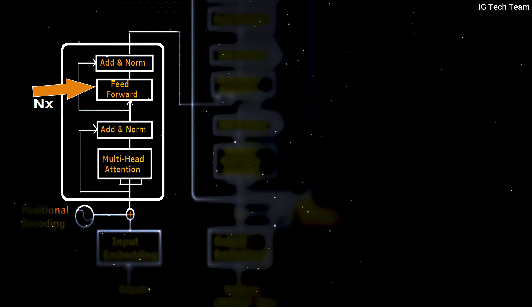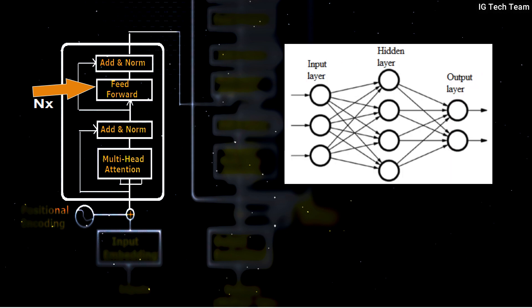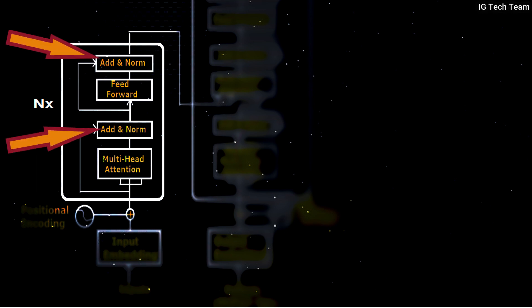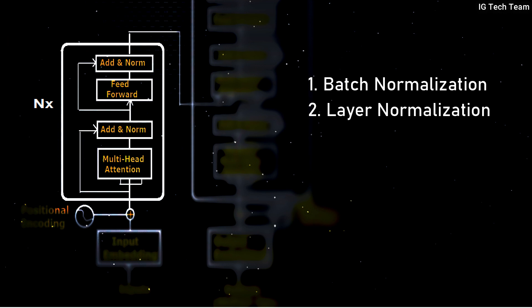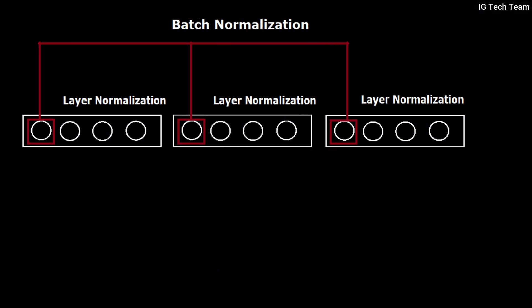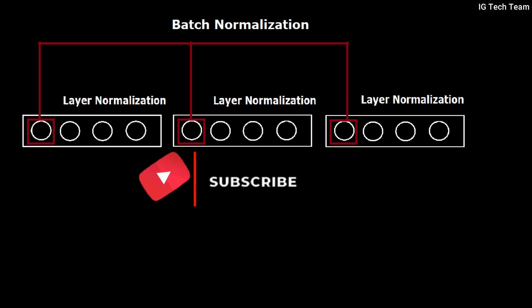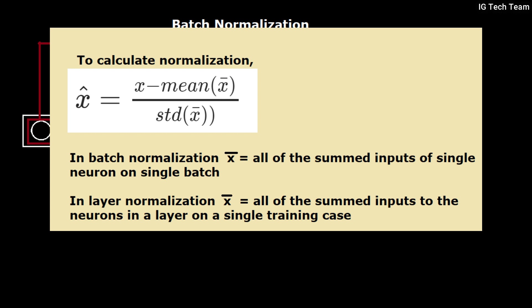The feed forward layer is simply passing vectors through a feed forward neural network. This layer converts our attention vectors to a form that can be passed to the next encoder or decoder layer. In each of these networks we have normalization. Normalization provides a uniform scale for numerical values — we can use batch normalization or layer normalization. In batch normalization, input values of the same neuron from different samples in a mini-batch are normalized. In layer normalization, input values for different neurons in the same layer are normalized without consideration of mini-batch. We have a formula to calculate normalization with different mean values for each type.